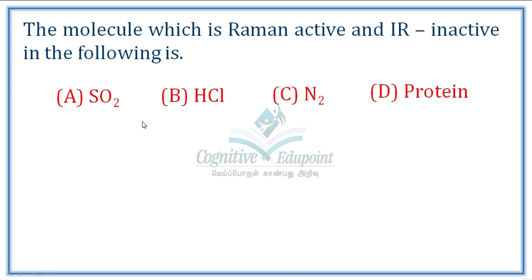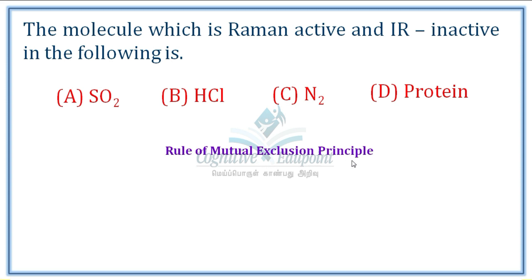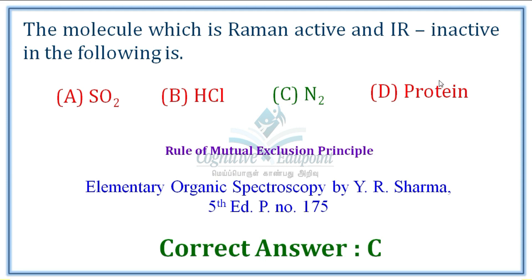Next question: Which molecule is Raman active and IR inactive? Using the rule of mutual exclusion principle, centrosymmetric molecules have peaks that are Raman active but IR inactive, and IR active but Raman inactive. Among the options, N₂ is a centrosymmetric molecule, while the other three are non-centrosymmetric. Correct answer is C. Very easy question.